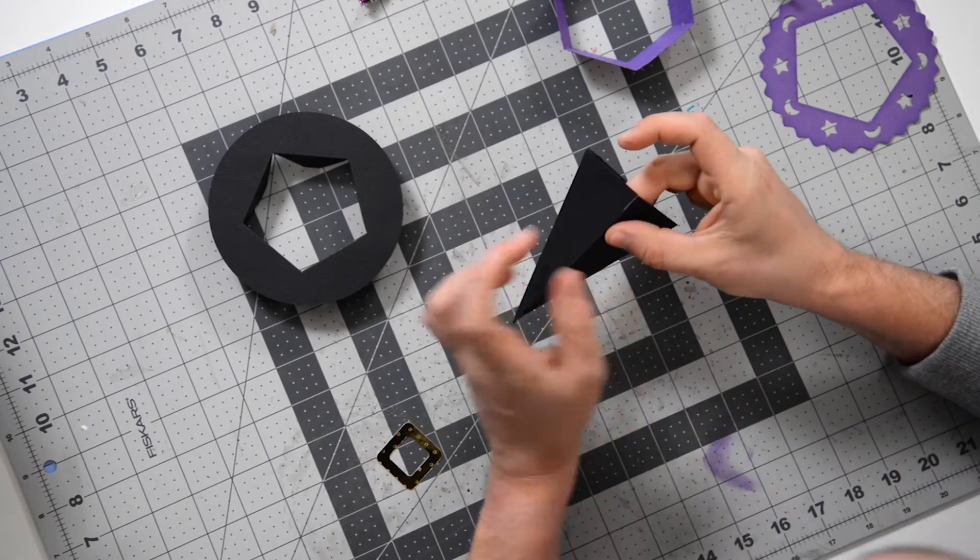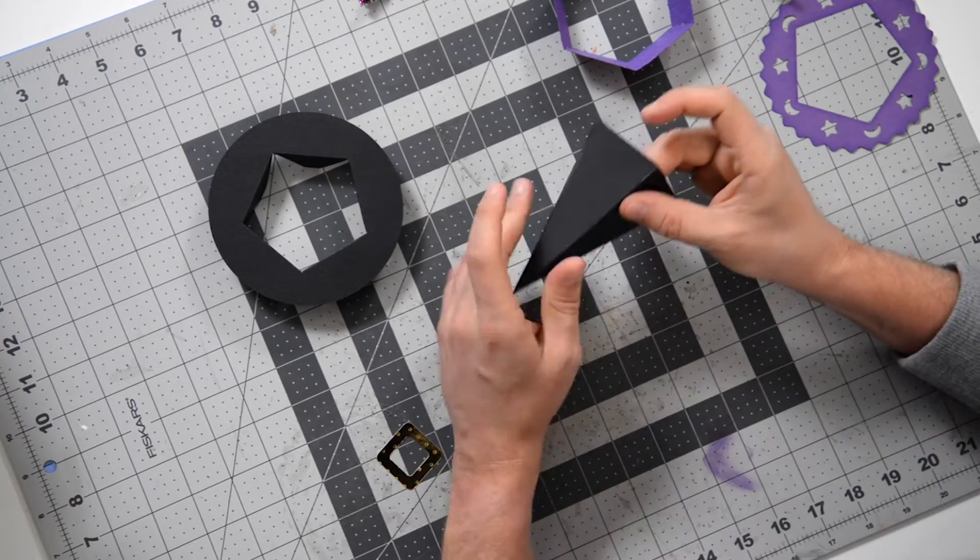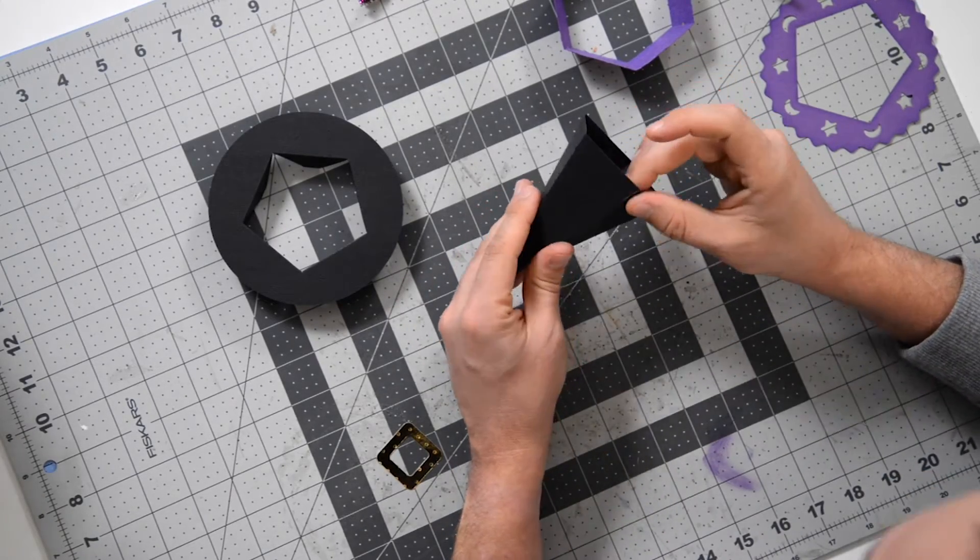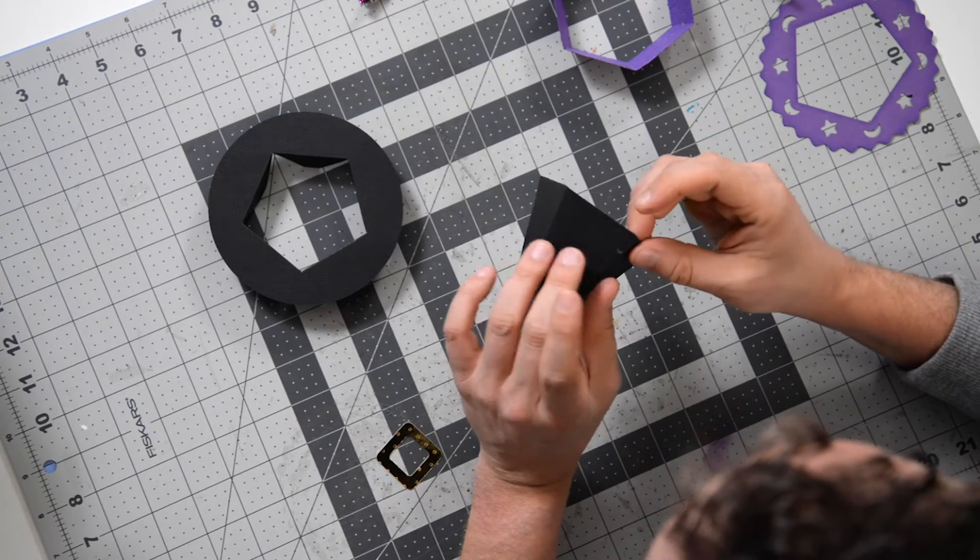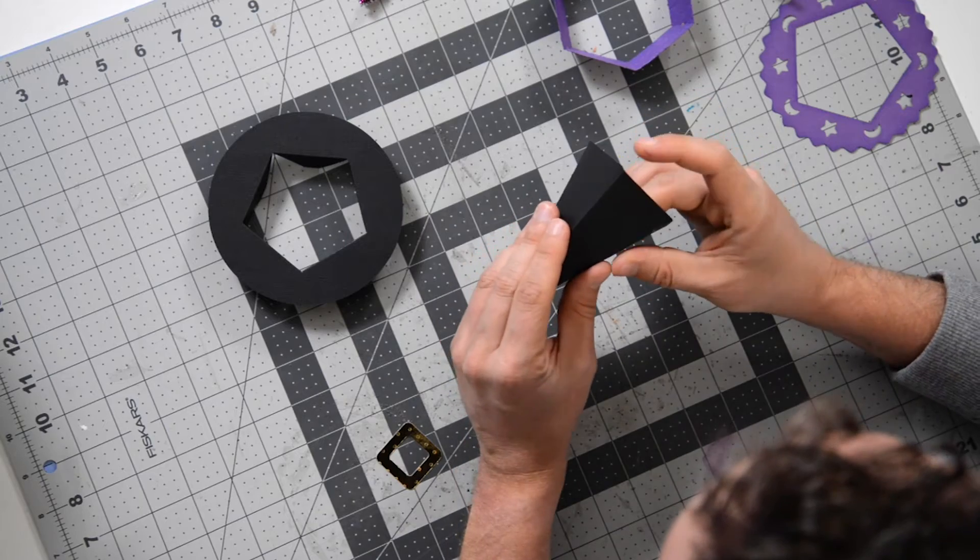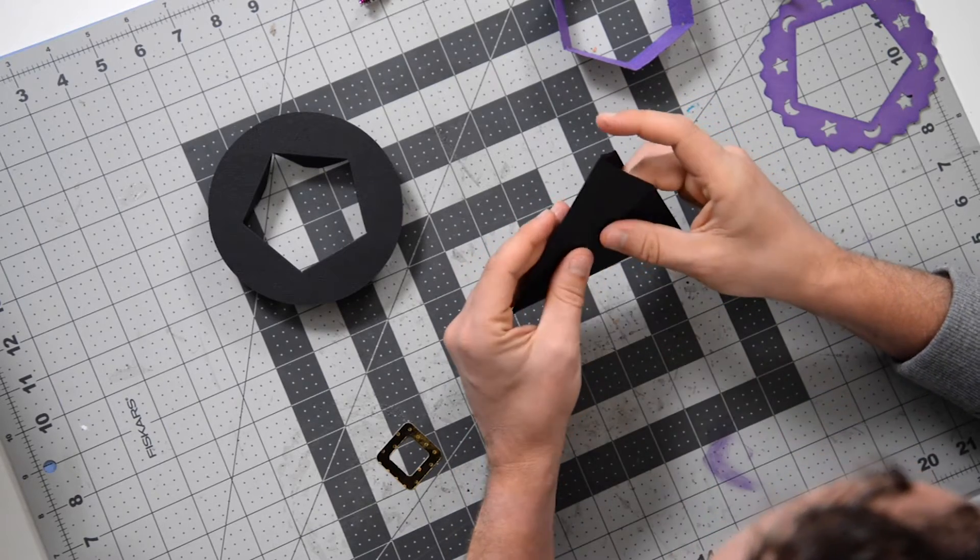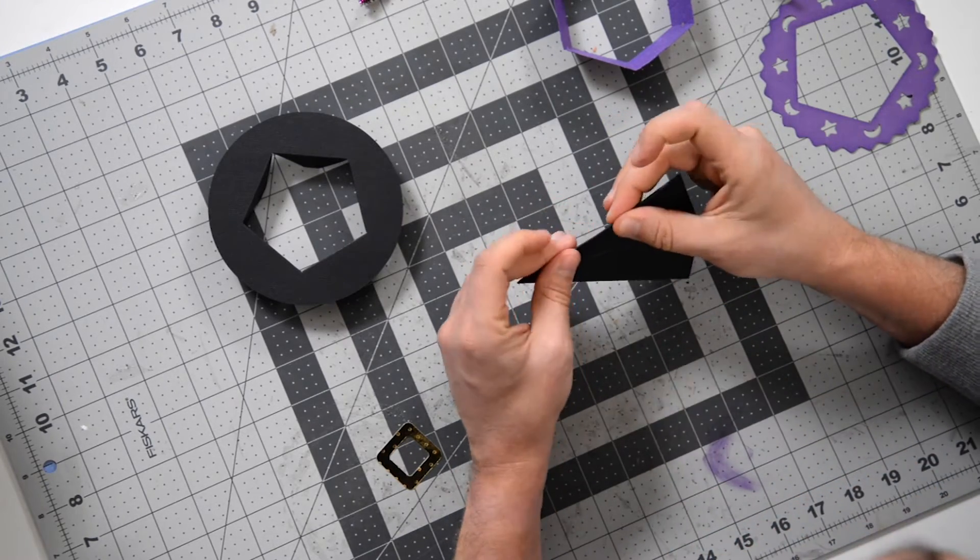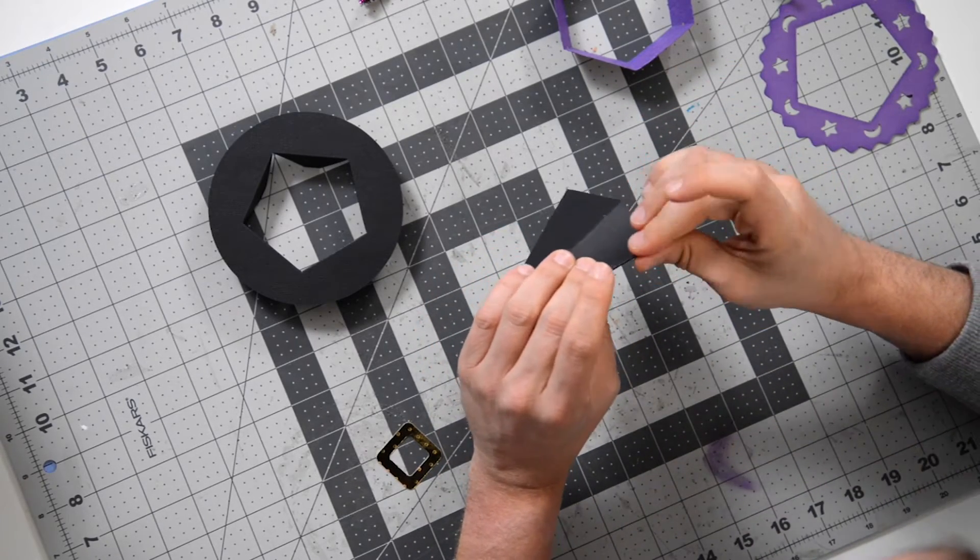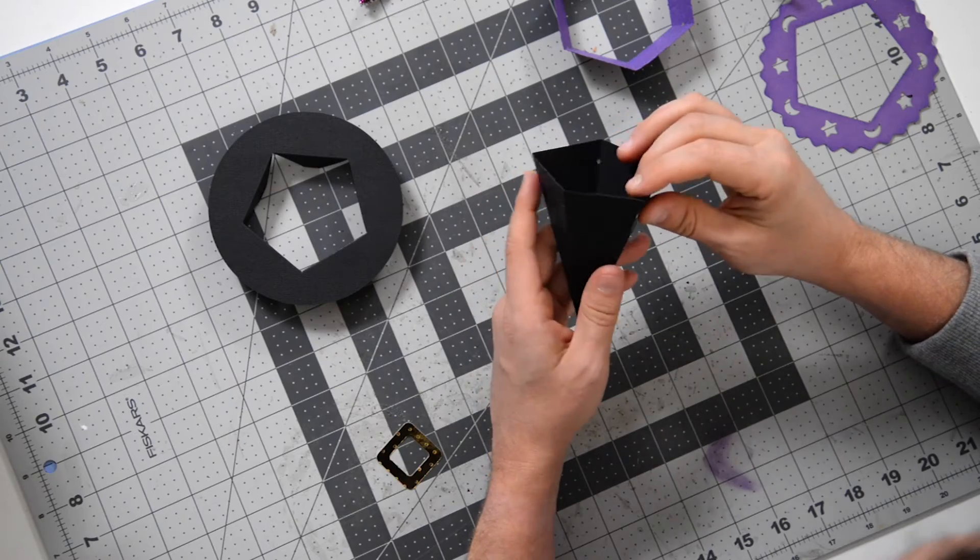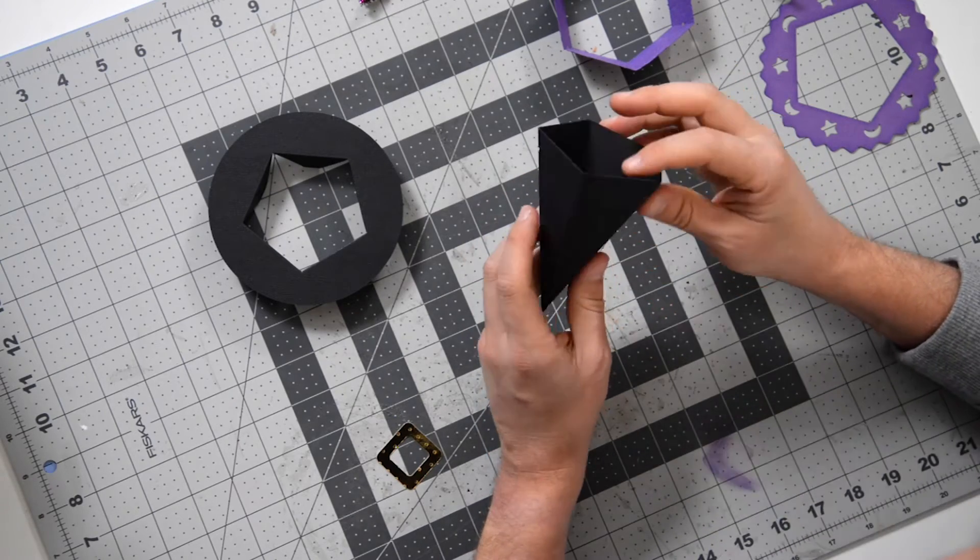There we go. If you get a little bit of glue that shoots out up here, it's okay. We are going to eventually put a nice purple piece right on there. And it looks like I'm going to go ahead and fold that at that seam where I just joined everything to make sure that everything sits nice and tight.